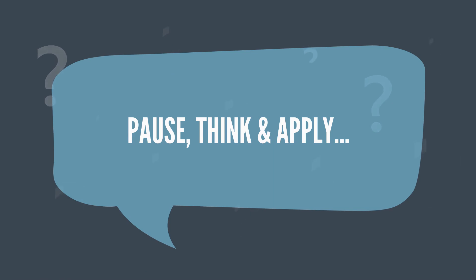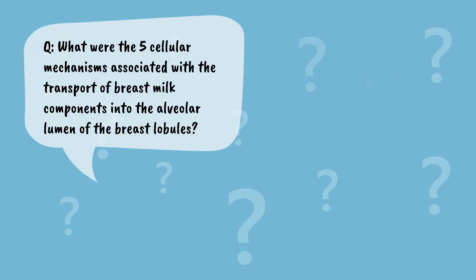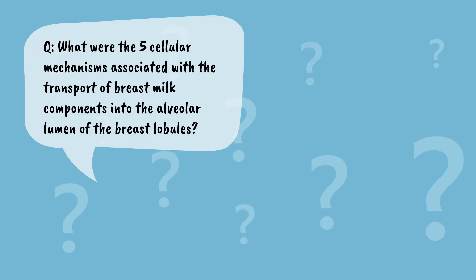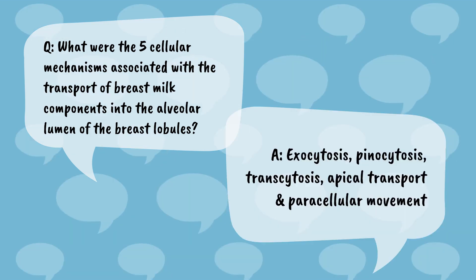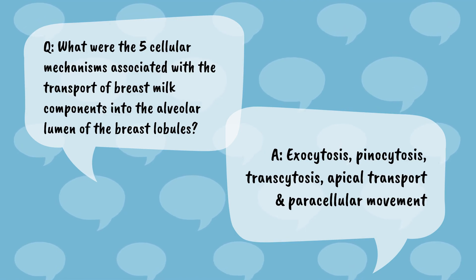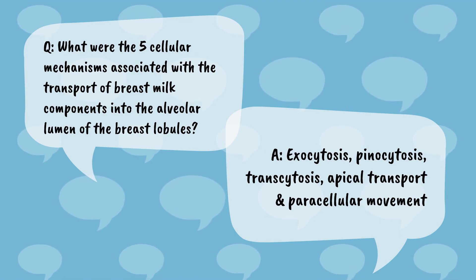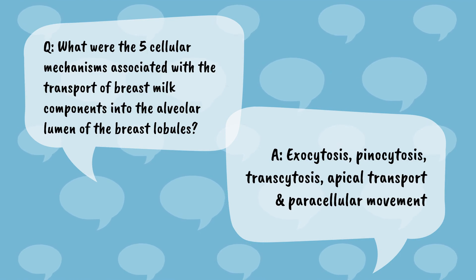Now let's pause, think, and apply. Think fast! What were the five cellular mechanisms associated with the transport of breast milk components into the alveolar lumen of the breast lobules? The answer is exocytosis, pinocytosis, transcytosis, apical transport, and paracellular movement.